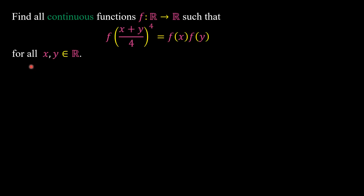Hello everyone. In this video we are going to find all continuous functions f mapping real numbers into real numbers such that f of (x + y)/4 to the power of 4 equals f(x) times f(y) for all real numbers x and y.